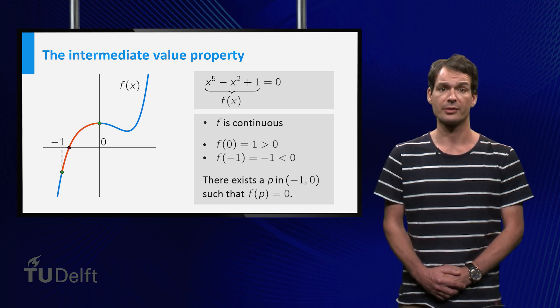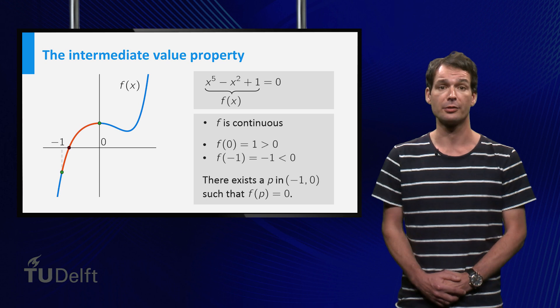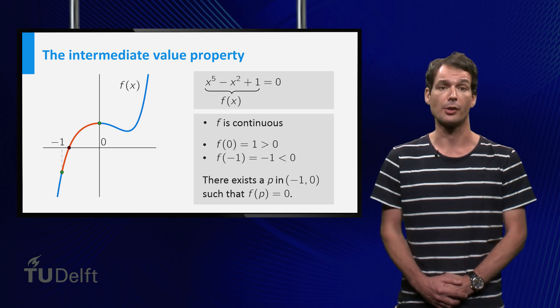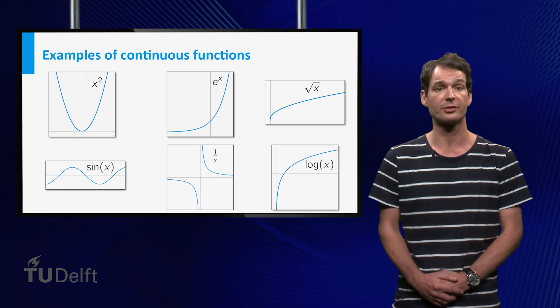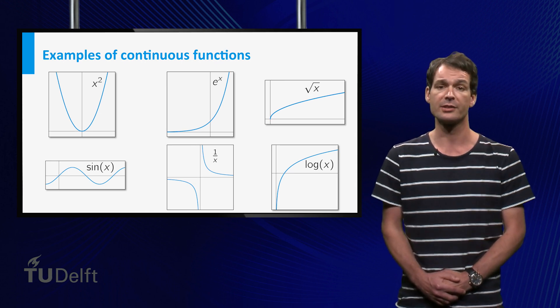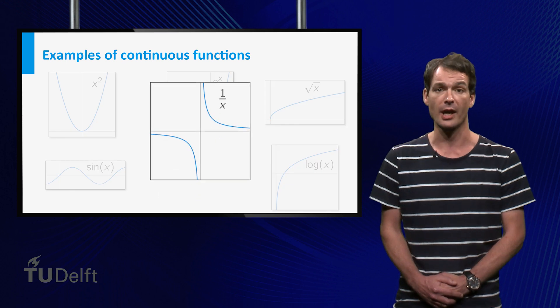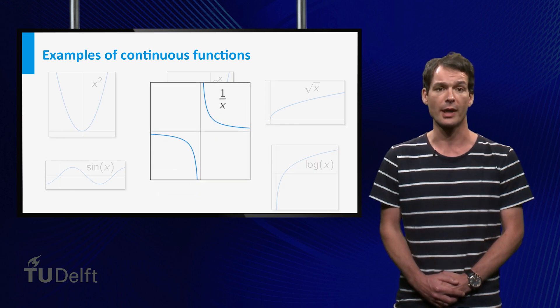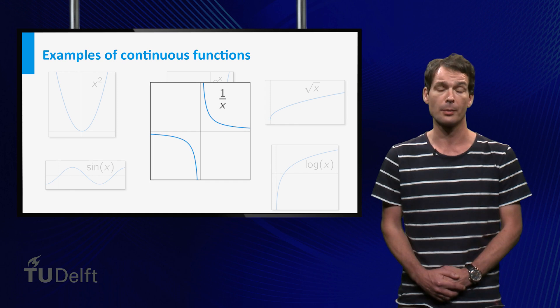Most of the functions that you've seen so far are continuous functions. For example, polynomials, but also rational functions and power functions are continuous on every point of their domain. For instance, the function 1 over x is continuous on its domain, which consists of all real numbers except 0.